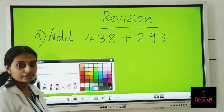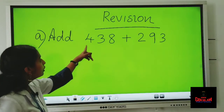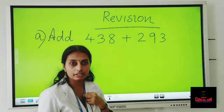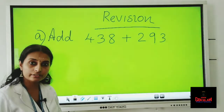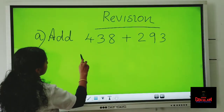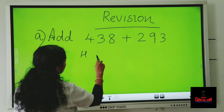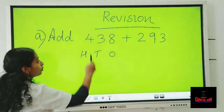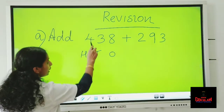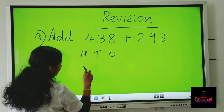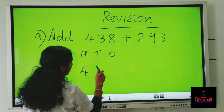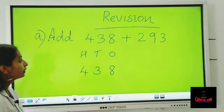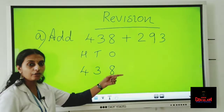Here we have a question: 438 plus 293. So how will we add this number? First hundreds, tens and ones, because these are three digit numbers. So write the first number. In hundreds place there is four, tens place there is three, and in the ones place we have eight.